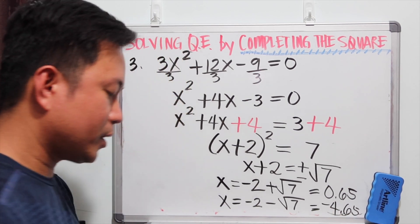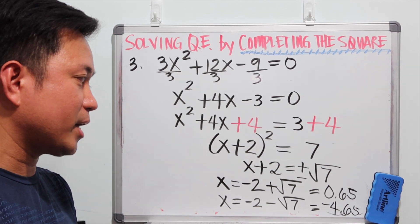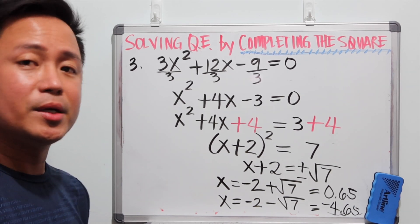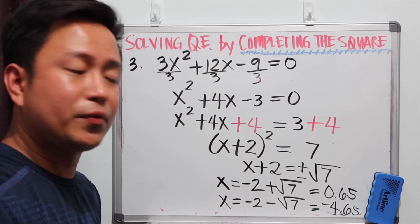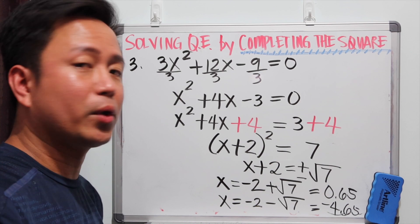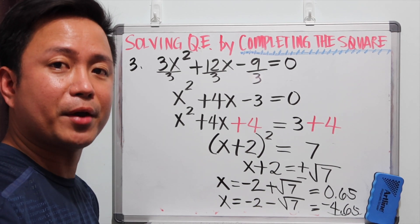So the two zeros of this quadratic equation are 0.65 and negative 4.65.